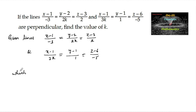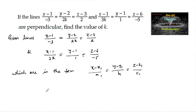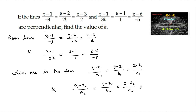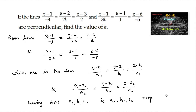These lines are in the standard form: (x-x1)/a1 = (y-y1)/b1 = (z-z1)/c1 and (x-x2)/a2 = (y-y2)/b2 = (z-z2)/c2. The direction ratios of the two different lines are a1, b1, c1 and a2, b2, c2 respectively. Then, if two lines are perpendicular,